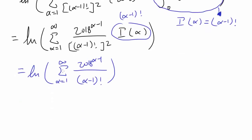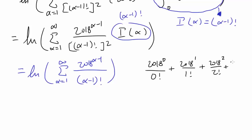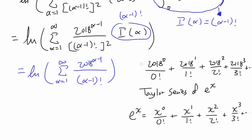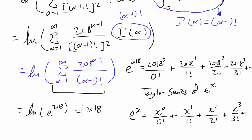What is this summation? When alpha equals 1: 2018^0 over 0 factorial. When alpha equals 2: 2018^1 over 1 factorial. Plus 2018^2 over 2 factorial, plus 2018^3 over 3 factorial, and so on. You may recognize this as a particular value of the Taylor series of e^x: e^x = x^0/0! + x^1/1! + x^2/2! + x^3/3! + ... In this case x is 2018, so this entire thing is e^2018. Taking the natural log gives us 2018. So the answer is 2018.